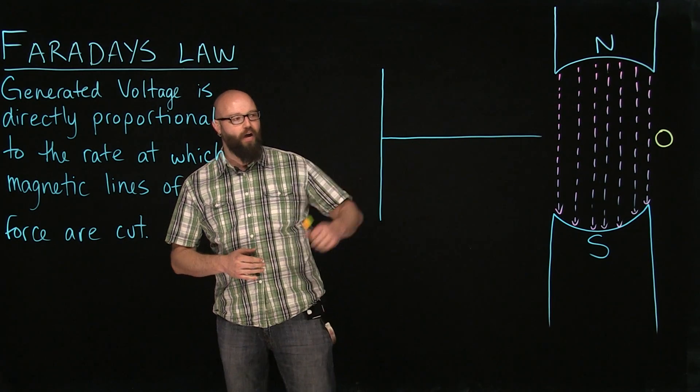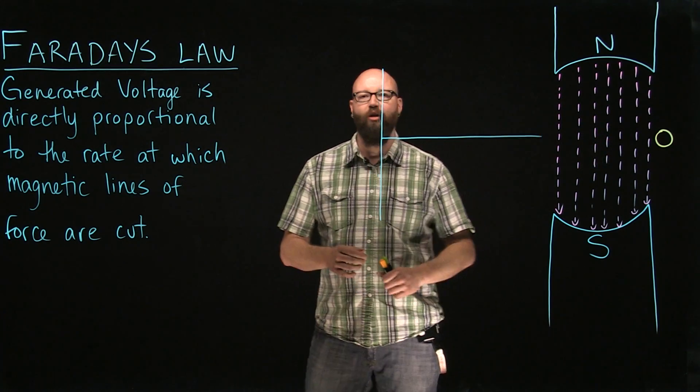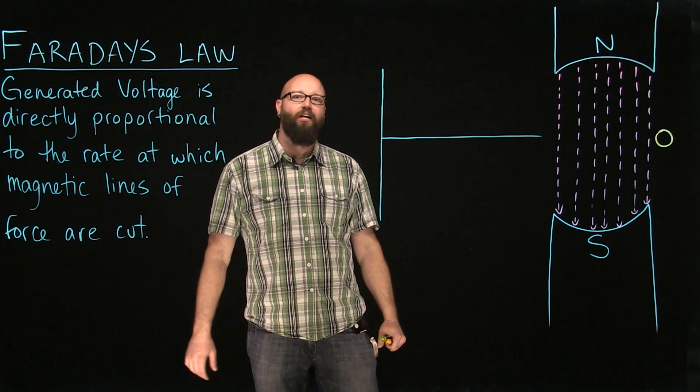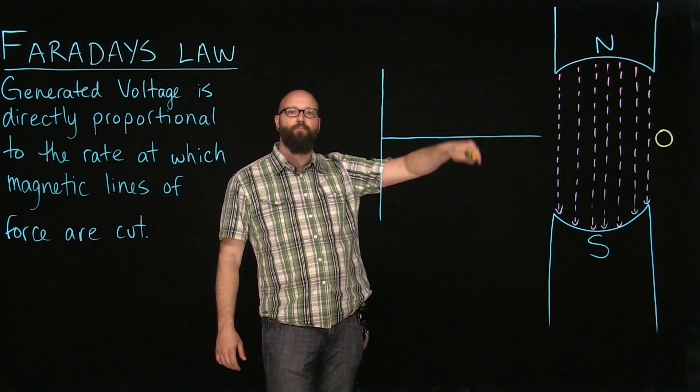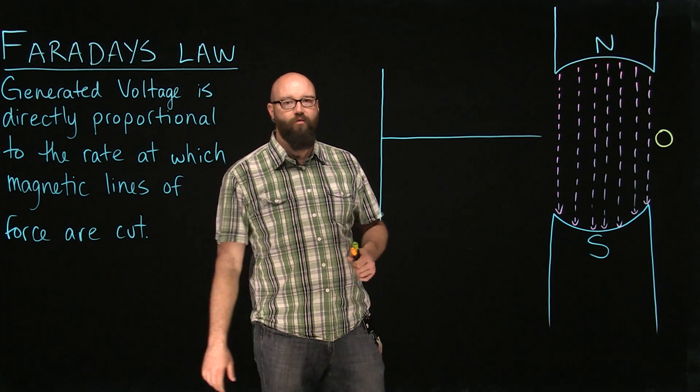If you look over here, I have a very simple two-pole generator drawn. Our orange circle represents our conductor. What Faraday's Law is telling us is the faster that conductor moves through those lines of force or cuts those lines of force, the more generated voltage we're going to get.